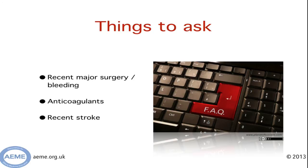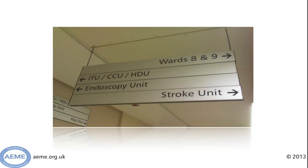It's also important to think about the most appropriate place of care for these patients, which is often an acute stroke unit. Stroke units have been shown to improve mortality and morbidity for all stroke patients, not just those undergoing thrombolysis. As such, in the NHS there are targets regarding how quickly patients with a stroke can be transferred to a recognised stroke unit.